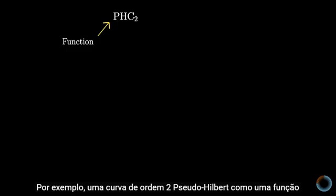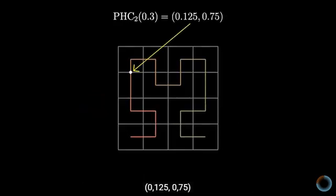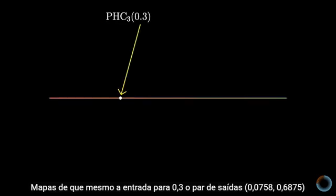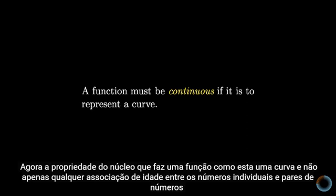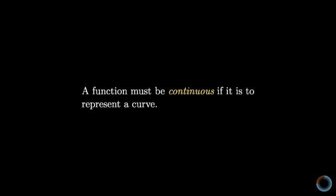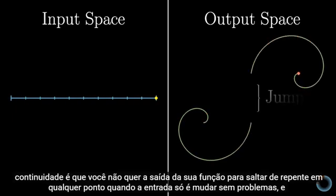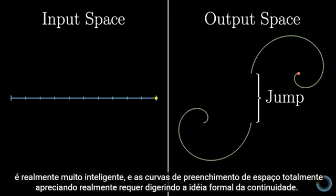For example, an order-two pseudo-Hilbert curve, as a function, maps the input 0.3 to the output pair (0.125, 0.75). An order-three pseudo-Hilbert curve maps that same input 0.3 to the output pair (0.0758, 0.6875). Now, the core property that makes a function like this a curve — and not just any old association between single numbers and pairs of numbers — is continuity. The intuition behind continuity is that you don't want the output of your function to suddenly jump at any point when the input is only changing smoothly. And the way that this is made rigorous in math is actually pretty clever, and fully appreciating space-filling curves really does require digesting the formal idea of continuity.